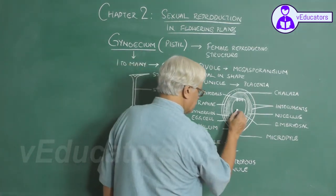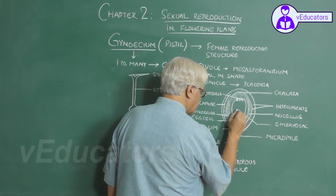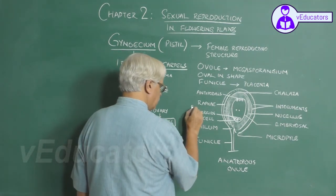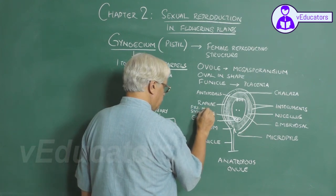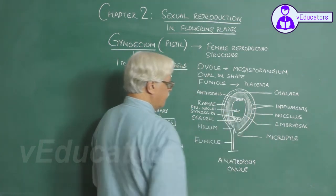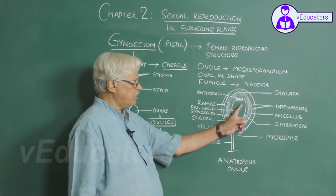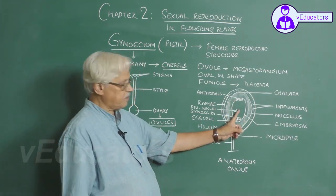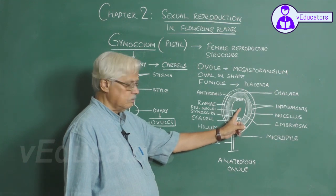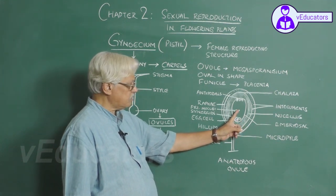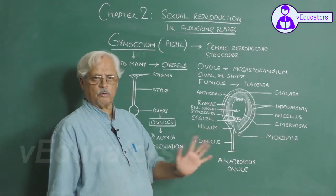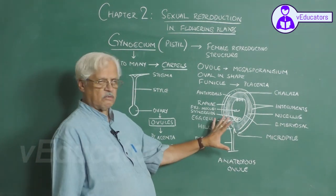You find two haploid nuclei in the center, and these two haploid nuclei represent the primary nuclei. So you find one, two, three, four, five, six, seven, eight nuclei in total. These two primary nuclei fuse just before pollination and fertilization to form a single cell. So three plus one equals four, plus three equals seven cells and eight nuclei. This is the characteristic feature of the ovule.